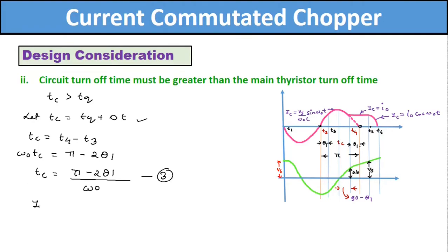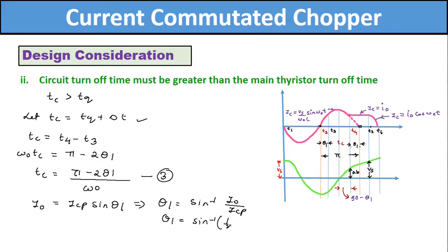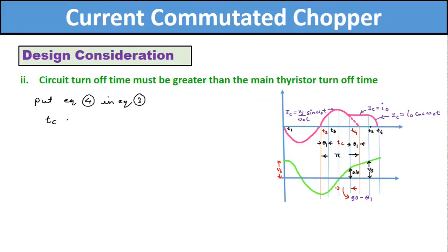The load current I0 = ICP × sin(θ₁), so θ₁ = sin⁻¹(I0 / ICP). Since ICP / I0 = X from equation 2, we can write θ₁ = sin⁻¹(1/X). Let this be equation number 4. Substituting into equation 3, we get Tc = [π - 2 sin⁻¹(1/X)] / ω₀.